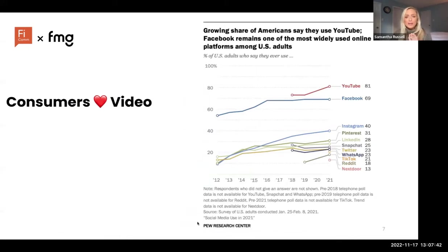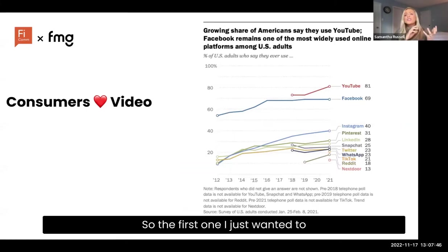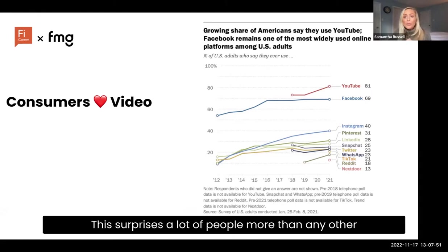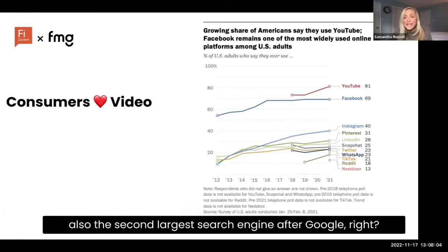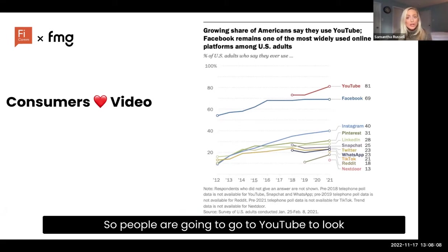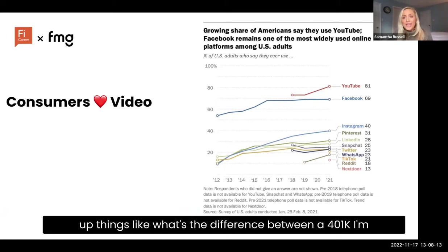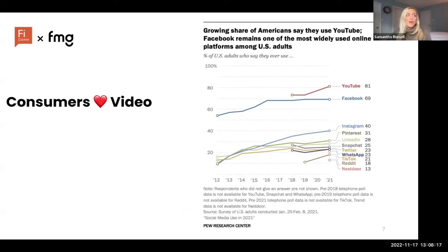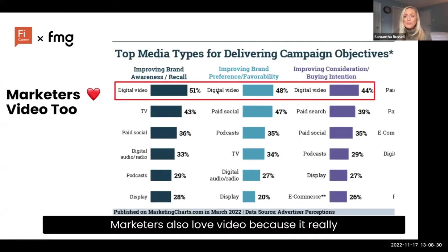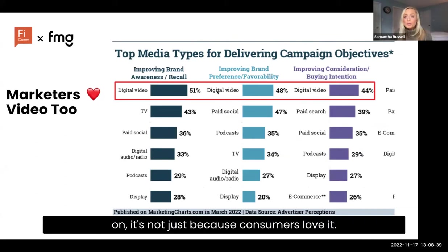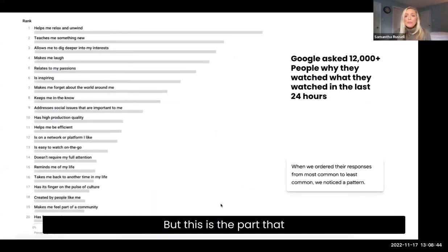In case you're here trying to convince someone on your team to create video, here are a few stats. From the Pew Research Center: more than any other app or social media site, YouTube is the most widely used platform. YouTube is also the second largest search engine after Google — people go there to look up things like the difference between a Roth IRA and a traditional IRA, or when's the earliest I can take Social Security. Marketers also love video because it helps accomplish a lot of goals. It's not just that consumers love it — we as marketers love it too.